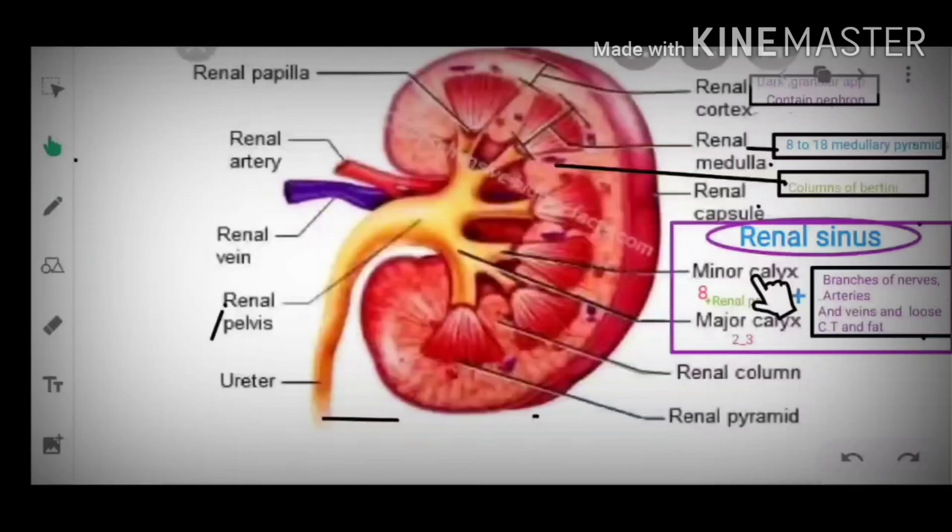Renal sinus consists of renal pelvis, minor calyx, major calyx, branches of nerves and arteries, veins and loose connective tissue and fat. There are 8 minor calyx and 2 to 3 major calyx.